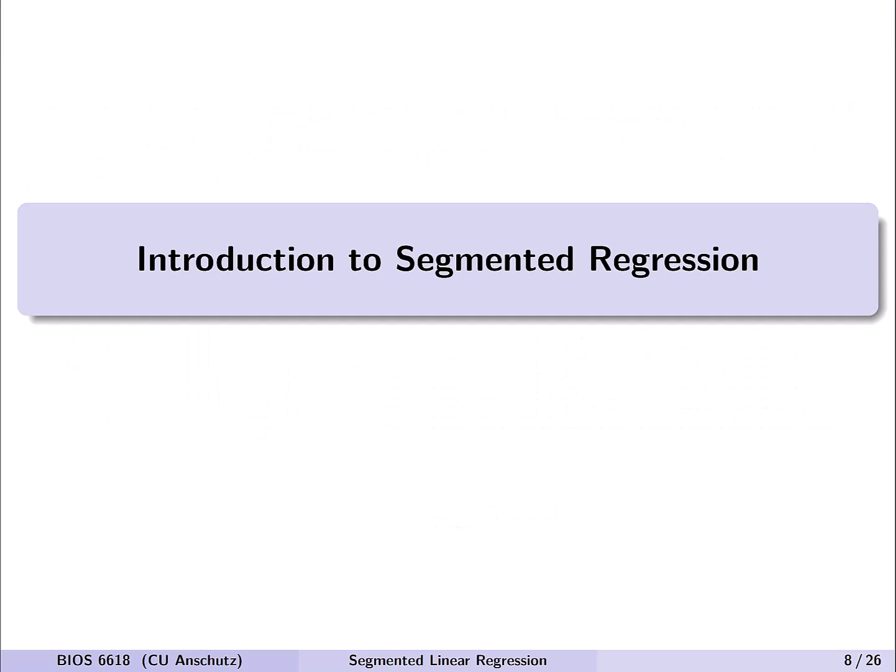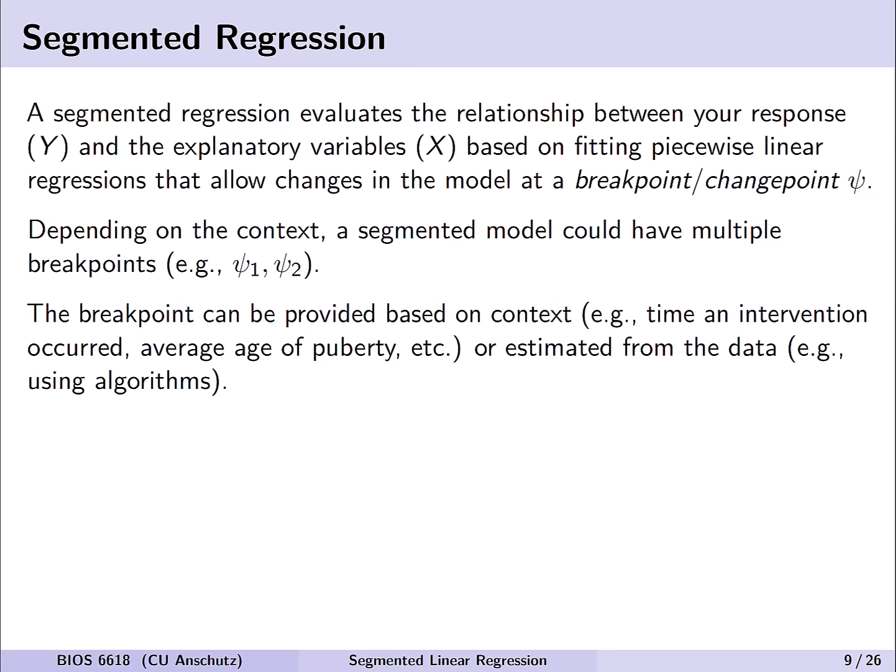Generally speaking, a segmented regression evaluates the relationship between your response y and an explanatory variable x based on fitting piecewise linear regressions that allow changes in the model at what we call break points or change points, denoted psi. Depending on the context, a segmented regression model could have multiple break points — for example, psi 1 and psi 2.